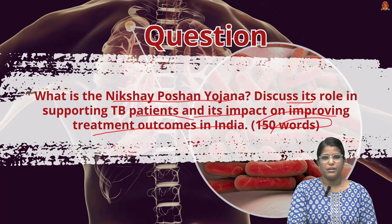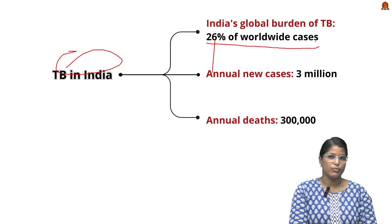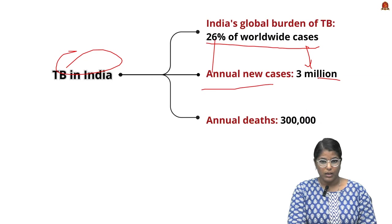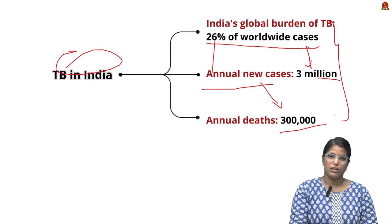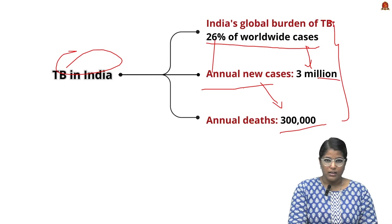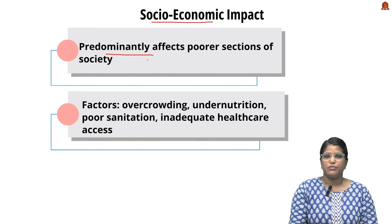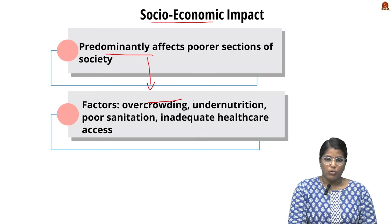Let us start with the status of tuberculosis in India. India has 26% of worldwide cases, accounting for about 3 million annual new cases, in which 3 lakh deaths happen annually. This reinforces the severity of this disease. The main reason behind the severity is the socio-economic impact — predominantly the poorer sections of society get affected due to TB.